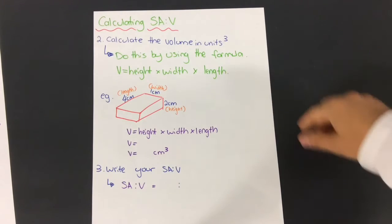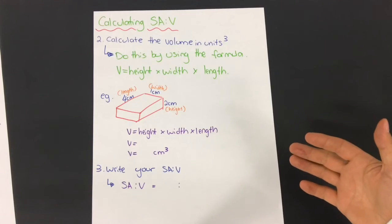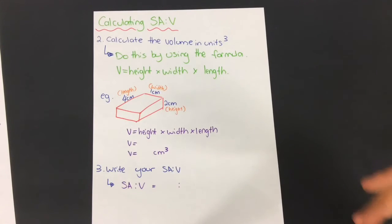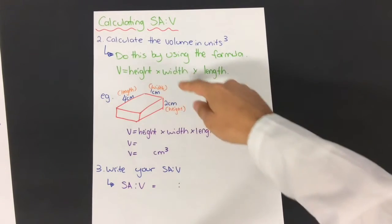It doesn't matter which side you use or which one you represent as the length, width, and height for this case, because it's all interchangeable—you're just multiplying them by each other. So four times one times two, that would look like this: it would be four times one times two.